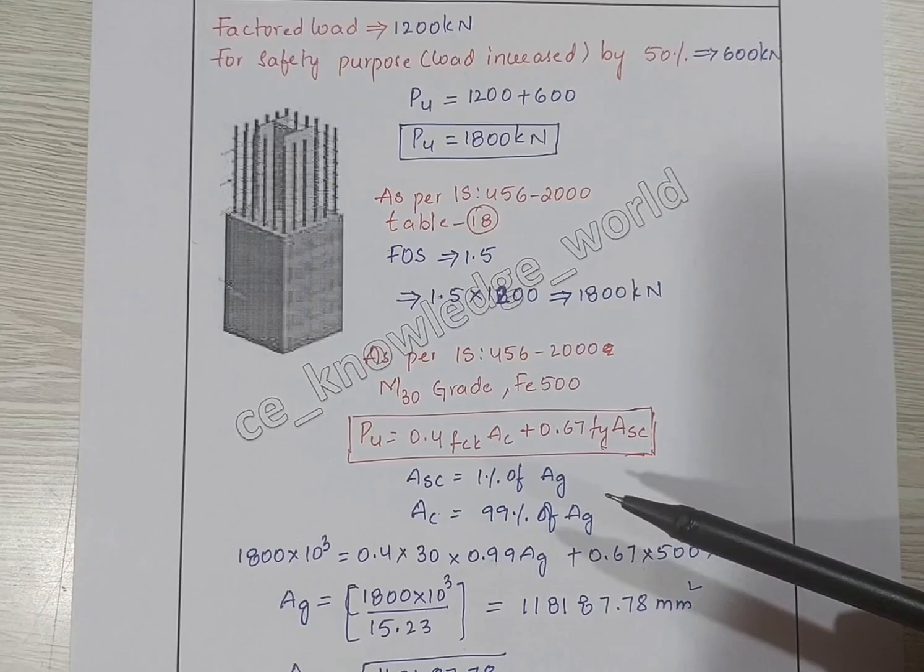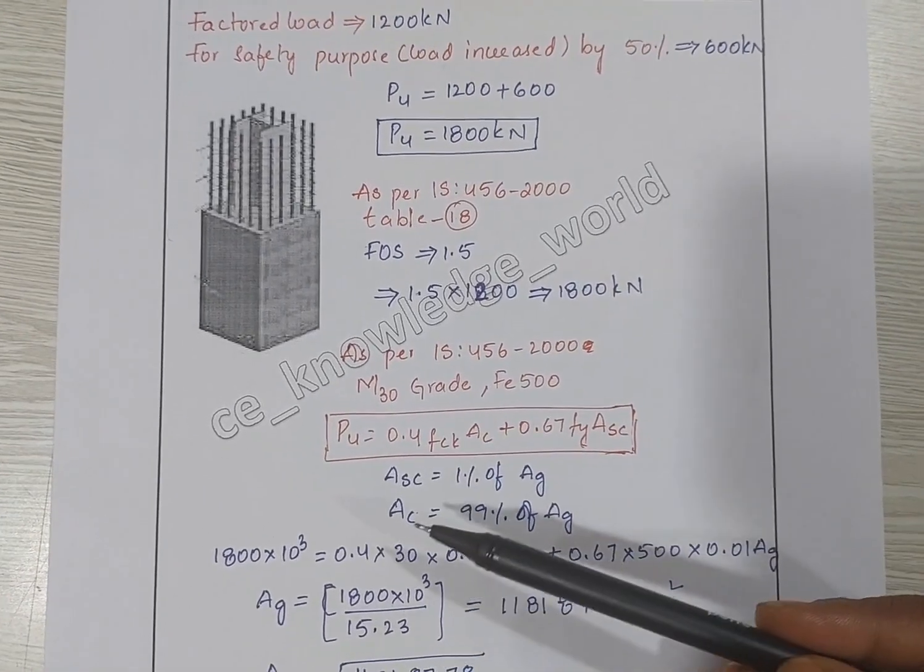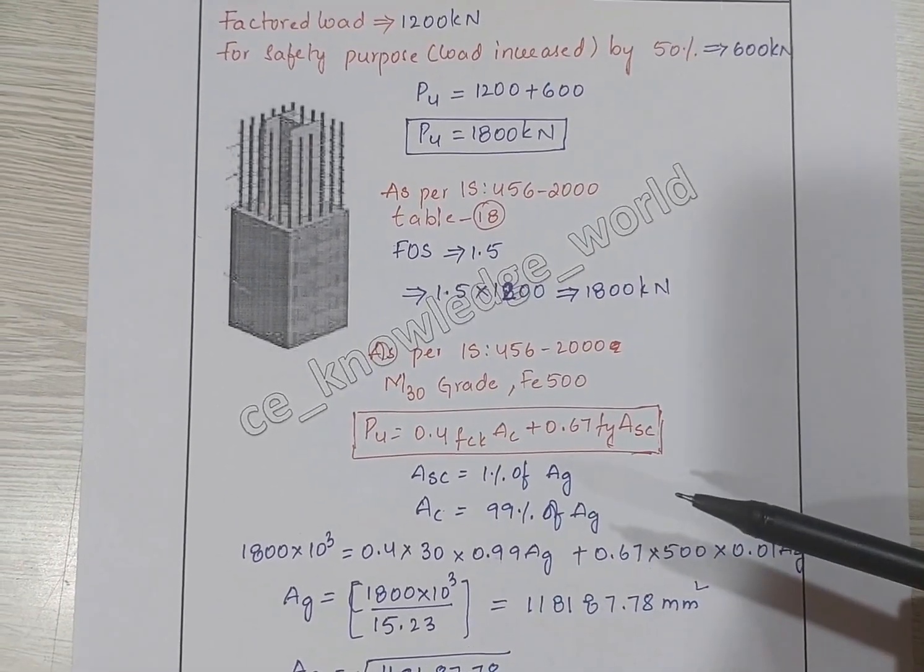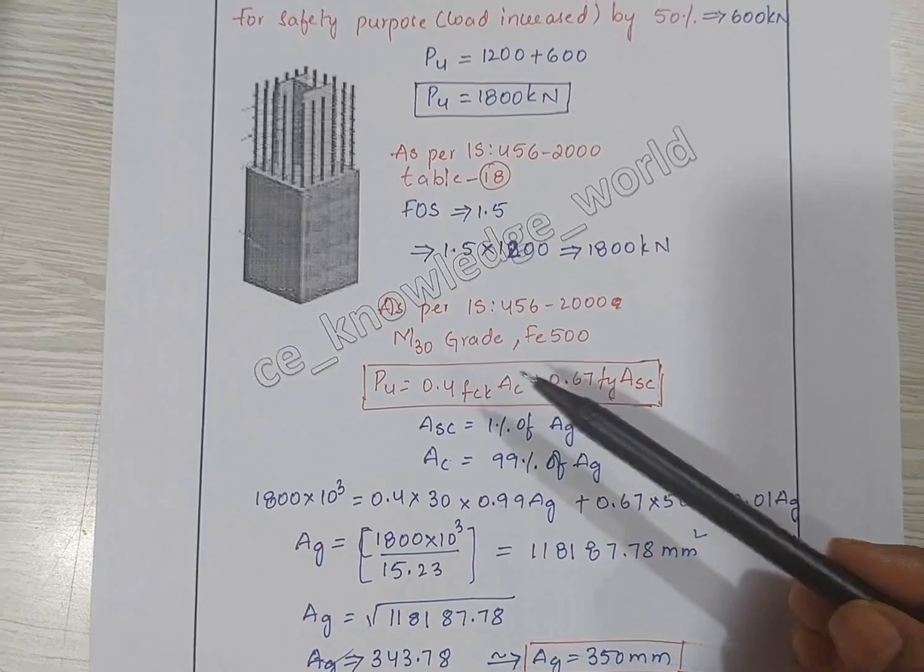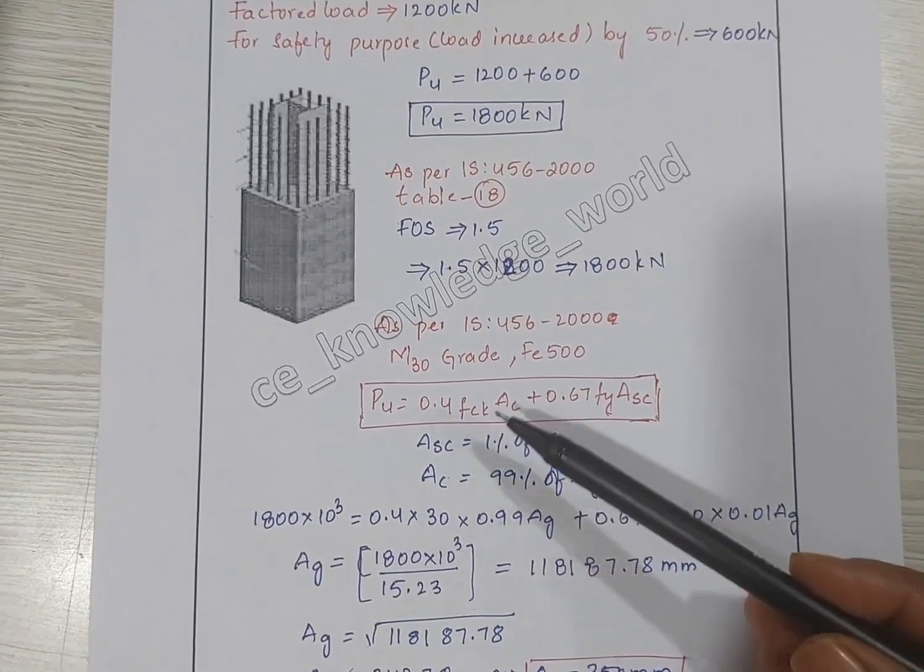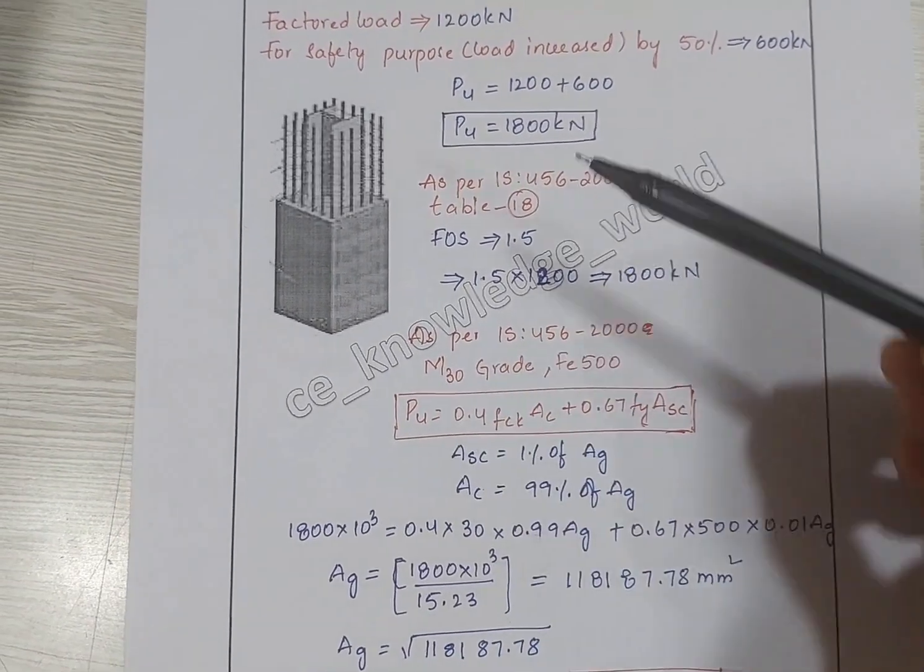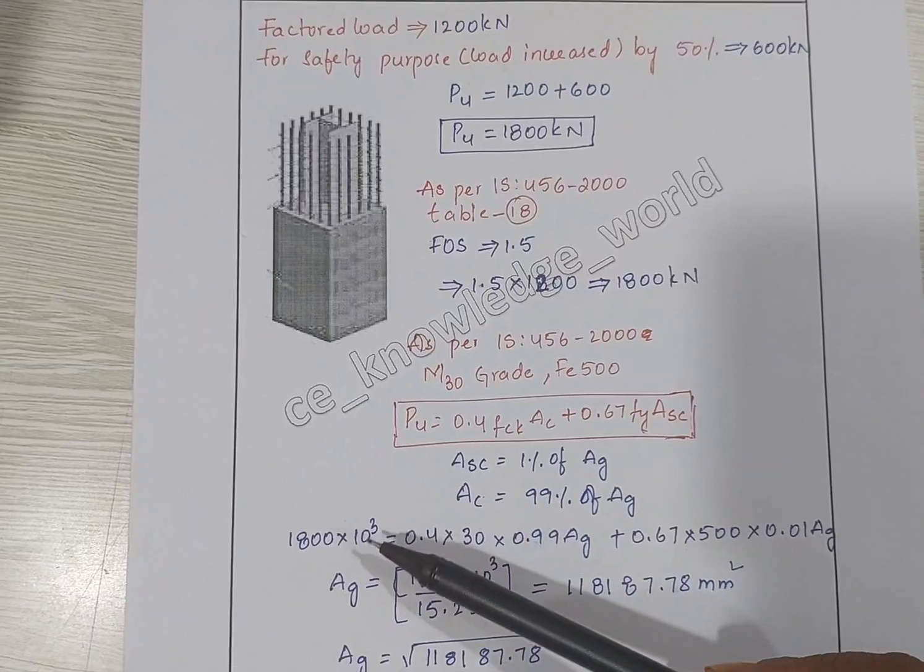Ag is the gross area, so Ac equals 99 percent of Ag. We will substitute these values in this formula. Here Pu equals 1800 kilonewtons. When we convert into Newtons, it will be times 10 cubed.